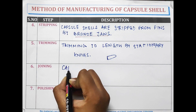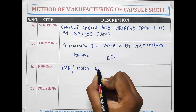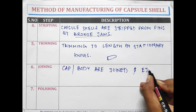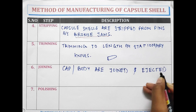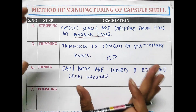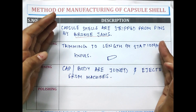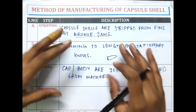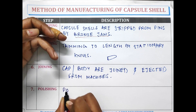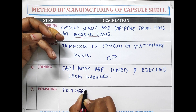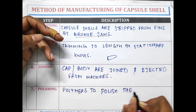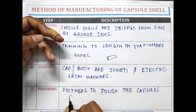After trimming, joining is done. In this step, the cap and body are joined together and ejected from the machine. As hard gelatin capsules have two parts — body and cap — it is necessary to join them after trimming. In the polishing step, polymers are used to polish the capsules for finishing.